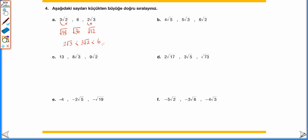13, 8√3, 9√2 sayılarını sıraladığımızda: 13 → √169; 8 → √192 (64 × 3); 9 → √162 (81 × 2). En küçük 162, sonra 169, sonra 192 olduğu için: 9√2 < 13 < 8√3 olarak sıralanır.